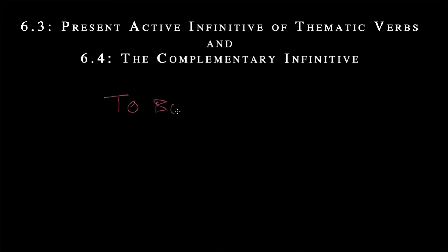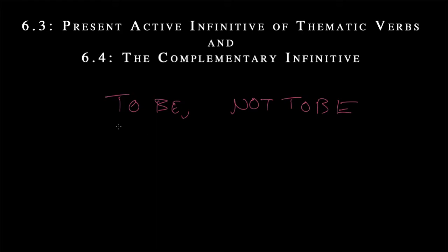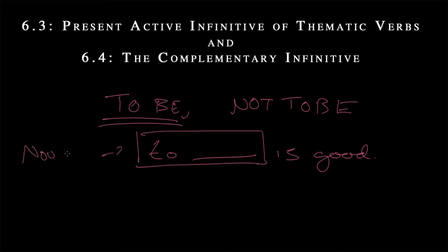Alright, present active infinitive of thematic verbs is what we're looking at. And this is the to be or not to be. That would be a negative infinitive, but infinitives in English, we have a good sense of these from English classes. It's the verb preceded by this to blank. To blank is good. And in this sense, to blank becomes somewhat like a noun.